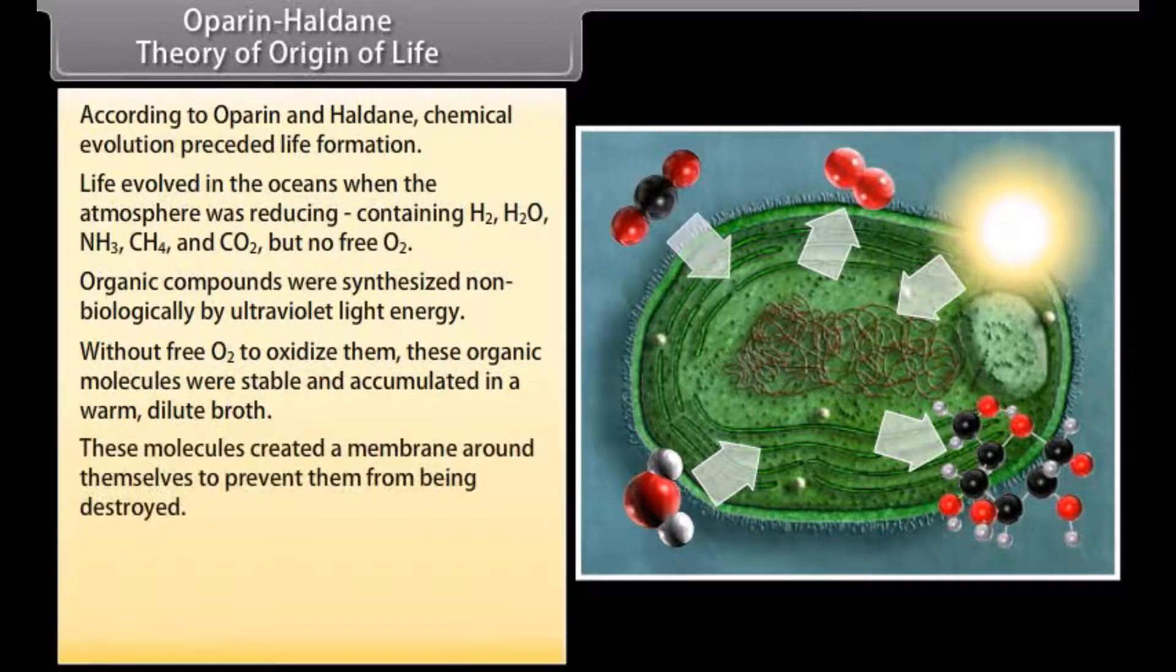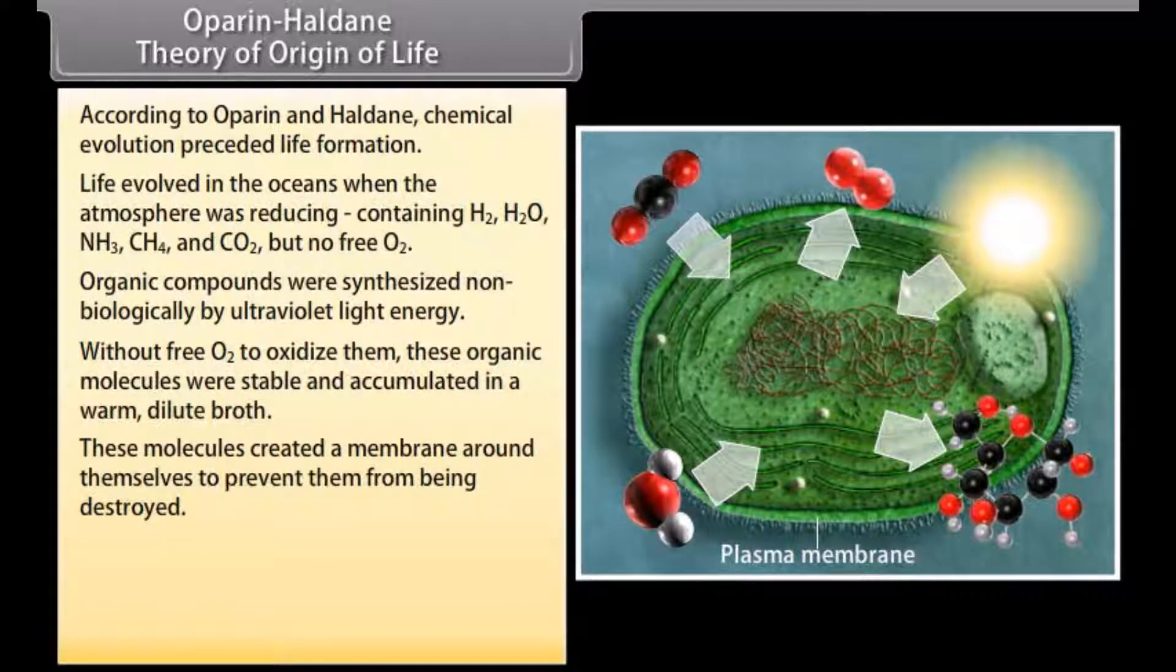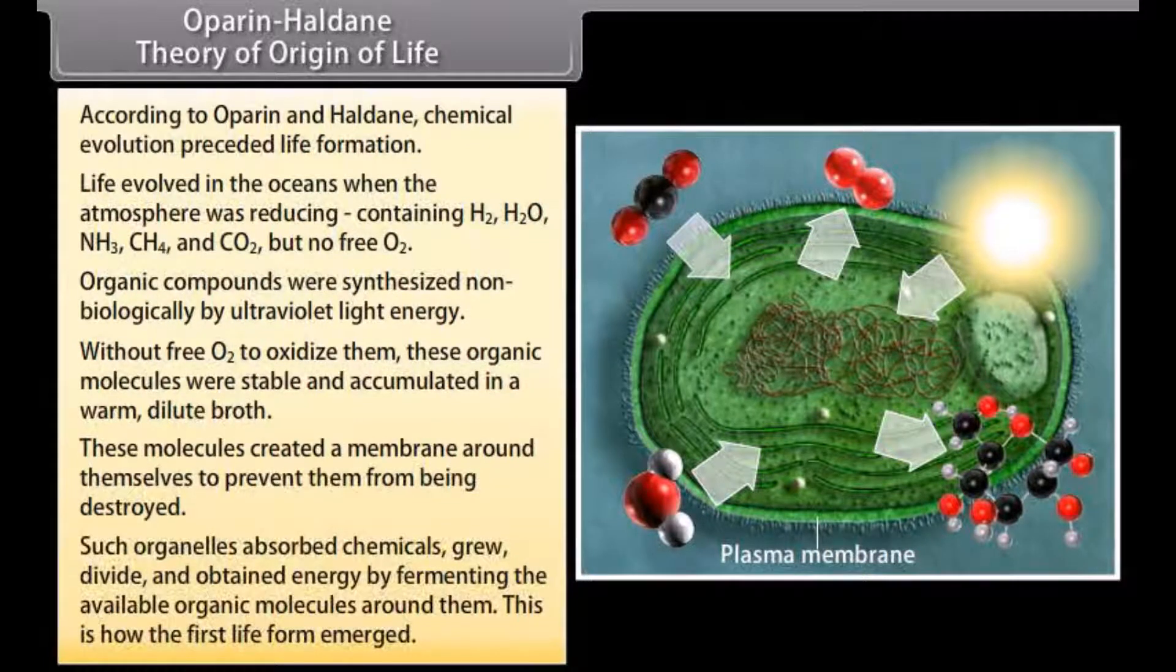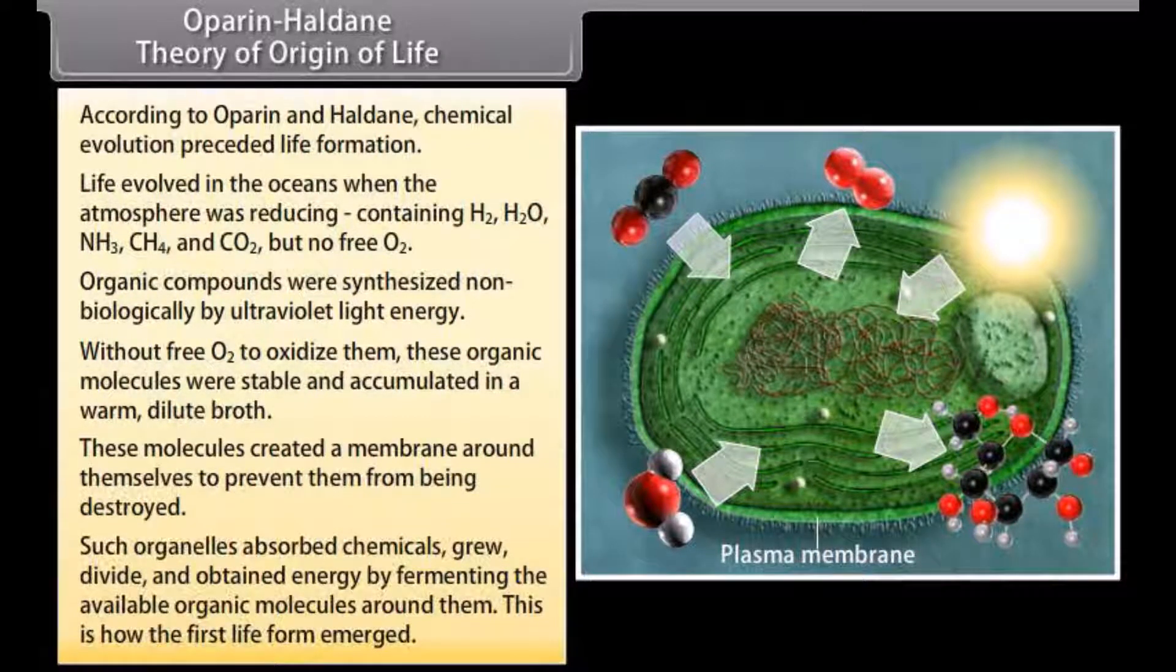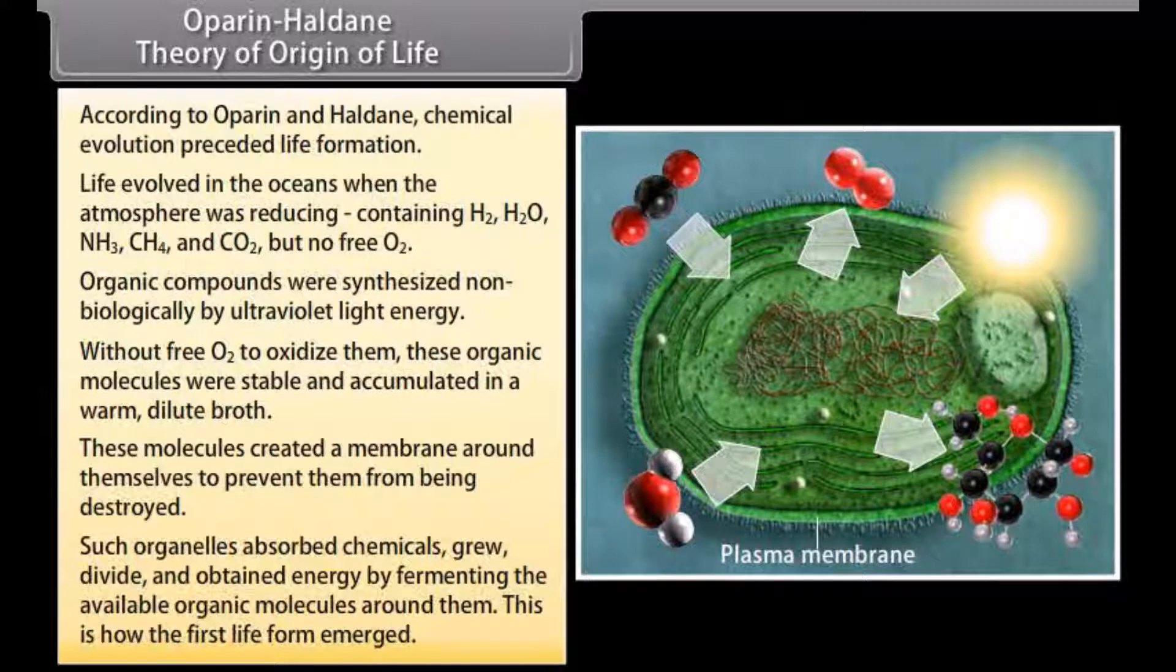These molecules created a membrane around themselves to prevent them from being destroyed. Such organelles absorbed chemicals, grew, divided and obtained energy by fermenting the available organic molecules around them. This is how the first life form emerged.